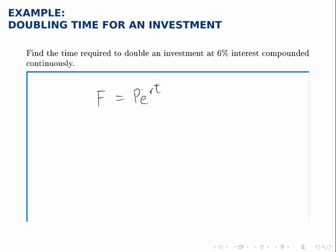Rather than working with say $100 for P and $200 for F or $1,000 for P and $2,000 for F, I'll just replace F with 2P. And the effect is the same.